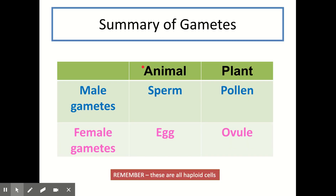Here's a helpful summary of the male and female gametes in plants and animals to help you remember the differences. One important thing to remember is that all four of these are gametes and so are haploid — they all have a single set of chromosomes.